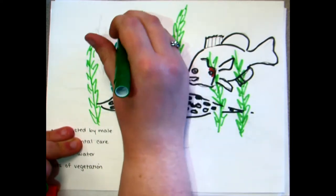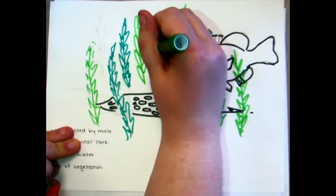Pumpkin seed will sometimes nest in bluegill colonies and crossbreed with them. Hybridization between sunfish species within the same water body is very common.